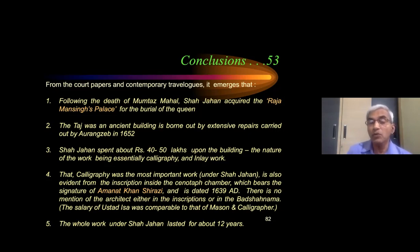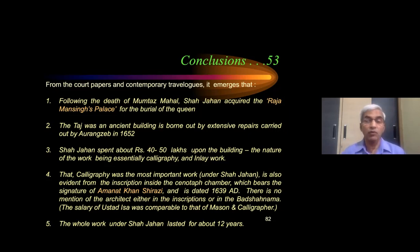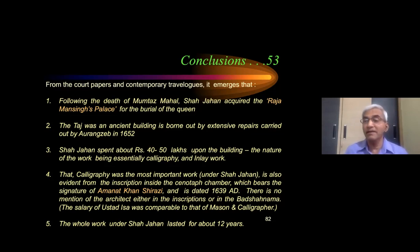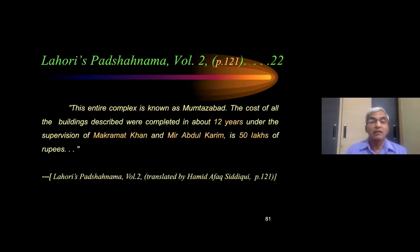The Taj was an ancient building, as borne out by the extensive repair carried out by Aurangzeb in 1652. It is very detailed, listing not only damage to the main dome but also the minor domes, the mosque, and the Jawab. He also describes the repair work carried out, how the concrete was relaid. He mentions that the architects were unable to suggest a mode of repair for the main dome. Shahjahan spent about 40 to 50 lakhs of rupees on this building - Badshahnama volume 1 says 40 lakhs and volume 2 says 50 lakhs.